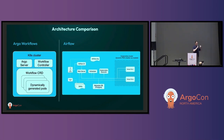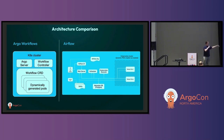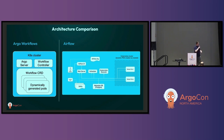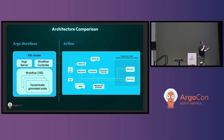This is a side-by-side comparison of the architectures. We can see Argo Workflows has a pretty lightweight footprint — we have the Argo server and the workflow controller, and the workflow CRD just spins up a bunch of dynamically generated pods. On the right, this is a workflow diagram I shamelessly stole from the Airflow official documentation, so don't at me if you think it's inaccurate. We can see that on the Kubernetes cluster itself we have the actual worker pods, but everything else is living outside of the cluster — that's the main difference here.